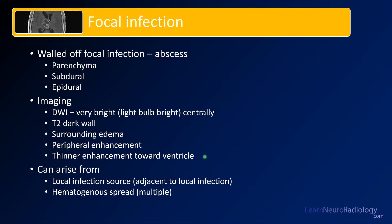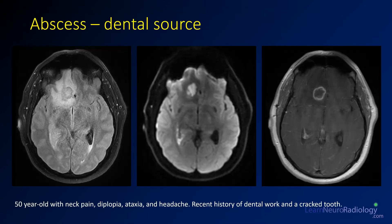An abscess can arise from a local infection source such as adjacent sinusitis, or from hematogenous spread such as in a patient with endocarditis. In this case we have a 50-year-old with neck pain, diplopia, headache, and a recent history of dental work and a cracked tooth. On FLAIR you've got a lot of abnormal signal within the inferior right frontal lobe, with maybe a central darker area.